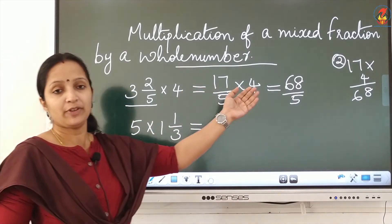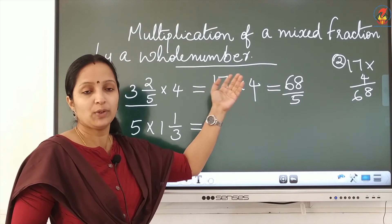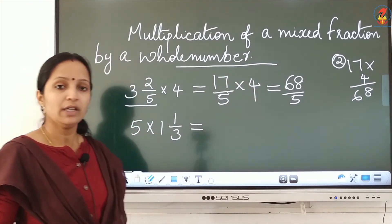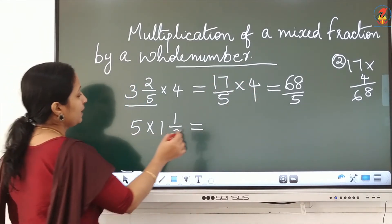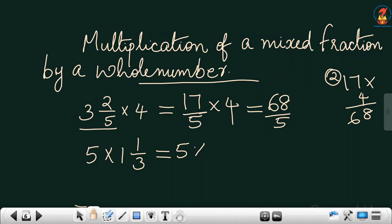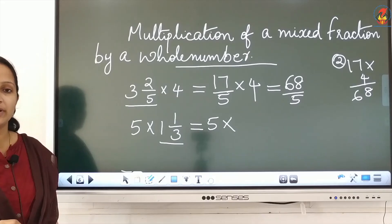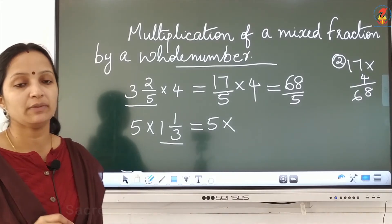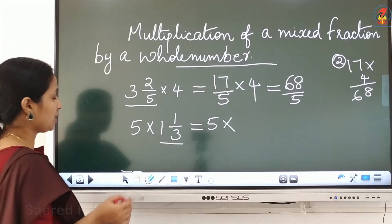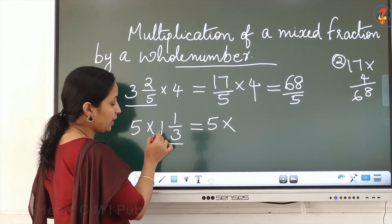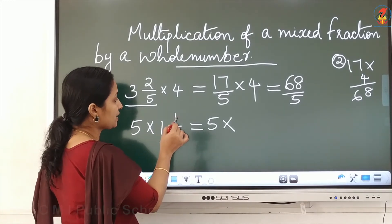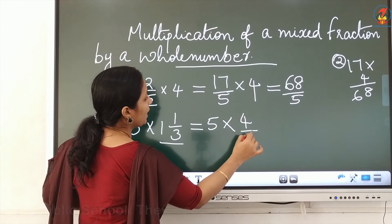68 by 5 is an improper fraction. If you want, you can convert it into a mixed number. Now for the second question: there is a mixed number, so first convert it into an improper fraction. Multiply 3 into 1 equals 3, then 3 plus 1 equals 4, giving 4 by 3. Now multiply 5 into 4 equals 20 — the answer is 20 by 3.